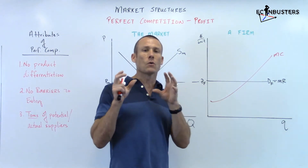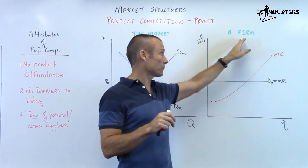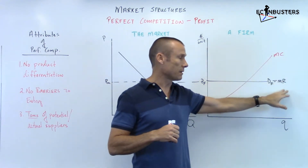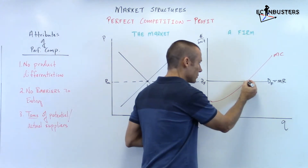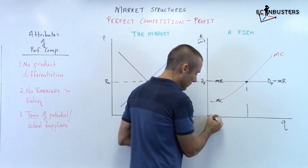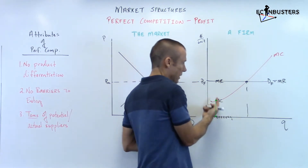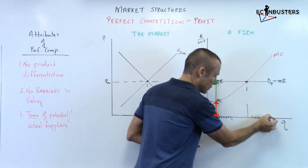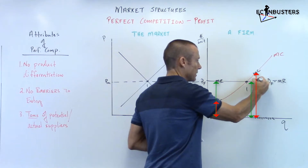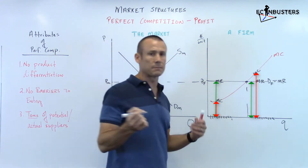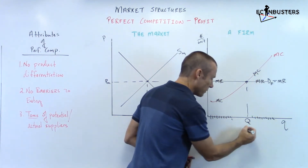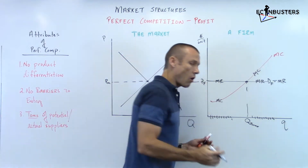We normally produce in the upward-sloping portion of the marginal cost curve. We have the marginal cost and marginal revenue curves because we make decisions at the margin. The decision this firm needs to make is how much to produce. You produce every single unit for which MR is above MC, and you do not produce any unit for which MR is less than MC.